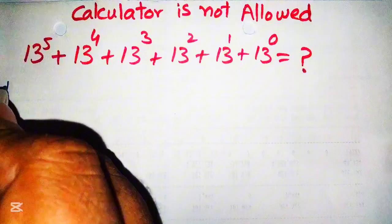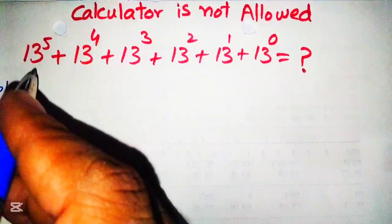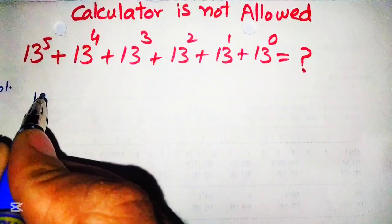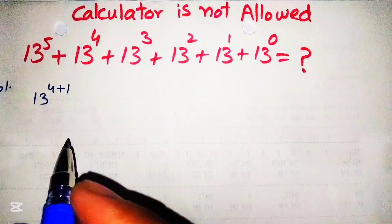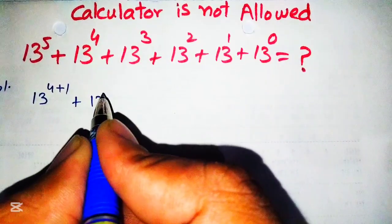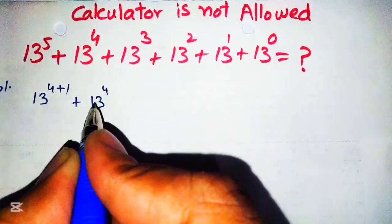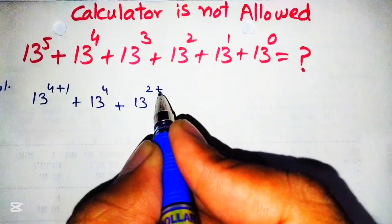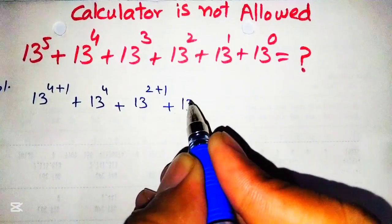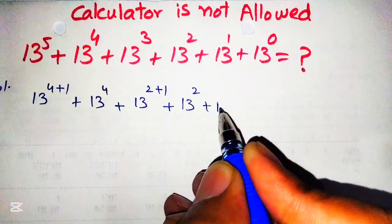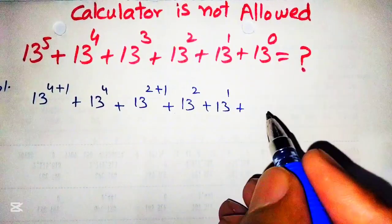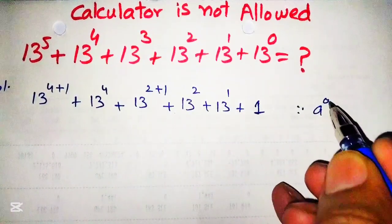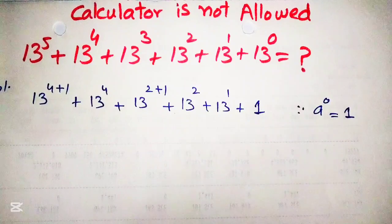To solve this, we will first break the powers. 13 raised to power 5 can be written as 13 raised to power 4 plus 1. Similarly, 13 raised to power 3 can be written as 13 raised to power 2 plus 1. We keep 13 raised to power 1 as is, and 13 raised to power 0 is equal to 1, since anything raised to power 0 equals 1.